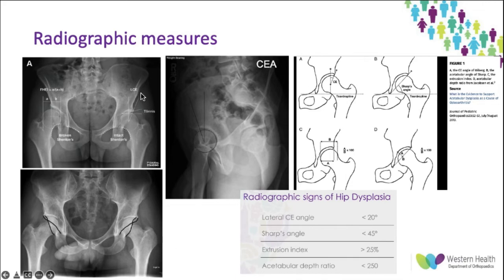The lateral center edge angle — marked LCE on the top left — assesses the supralateral coverage on the AP view. Sharp's angle is on the far right and gives an indication of whether the hip is dysplastic, with a measurement greater than 42 degrees being dysplastic and 39 to 42 being borderline. The extrusion index is the width of the uncovered femoral head divided by the total width of the femoral head, and the acetabular depth ratio measures depth of the femoral head protruding across the line of the acetabulum.